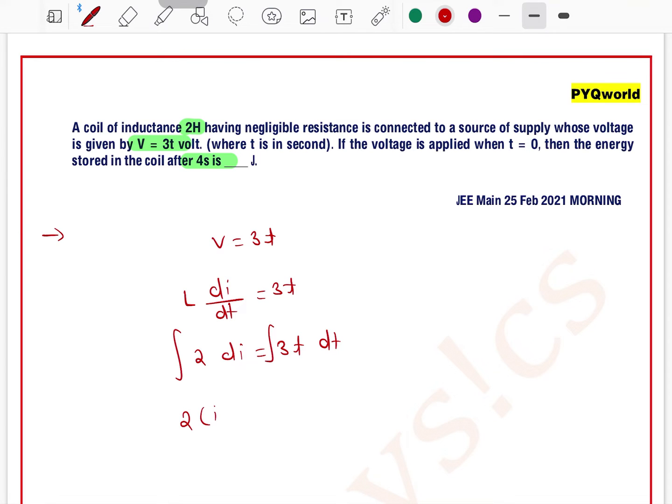...this integration gives us 2I. We will put the time limits later. T equals 0 when the applied voltage starts. Initially current is 0 and T equals 4 seconds.